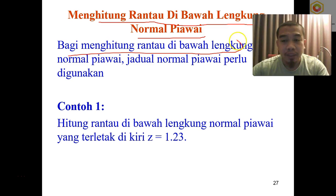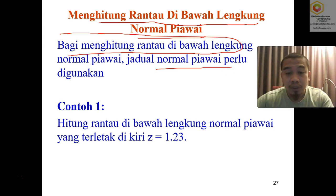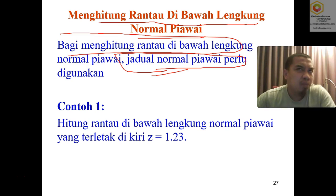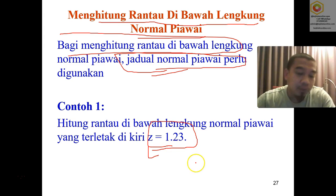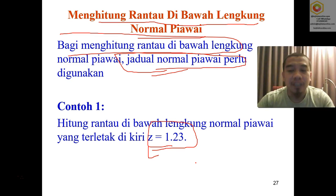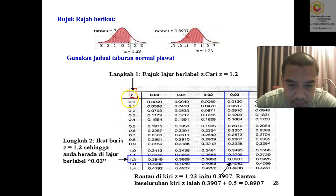To estimate the area under the curve, you need the normal standard tabulation of data table. For example, the table is used when z is equal to 1.23. We are going to estimate what area the statisticians have already calculated based on z = 1.23. We find the z value first.